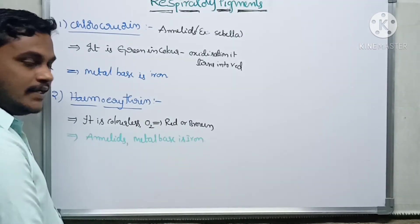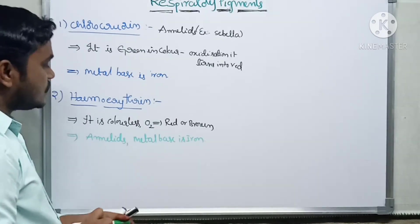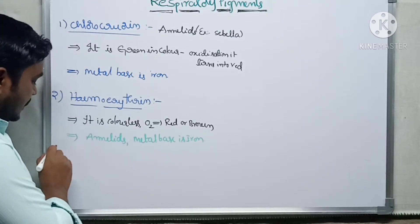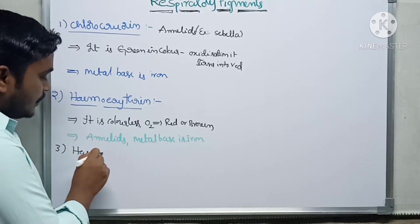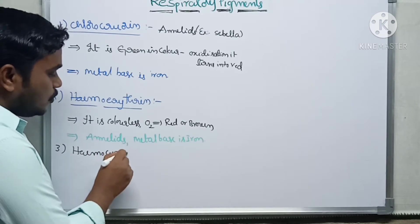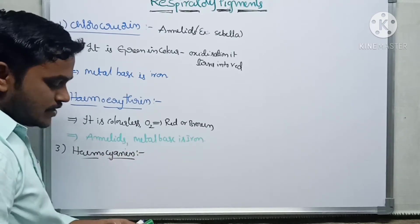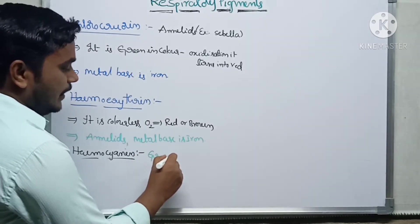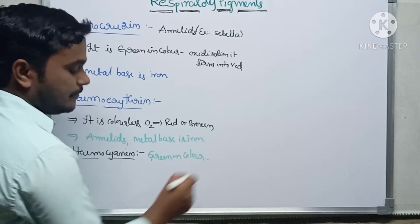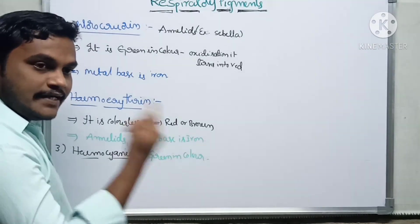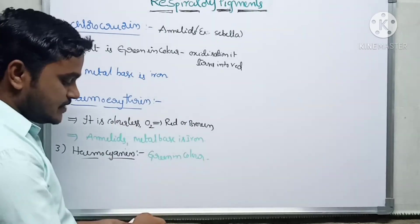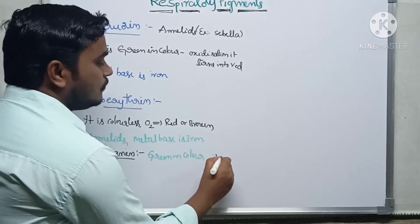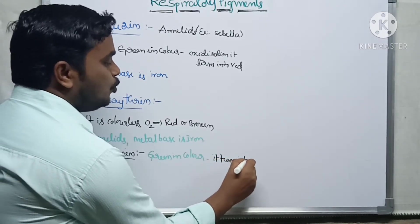The metal base for hemo-erythrin is iron. One more respiratory pigment is hemocyanin. Actually, hemocyanin is green in color. But after oxidation, after reacting with oxygen, it turns into blue color.